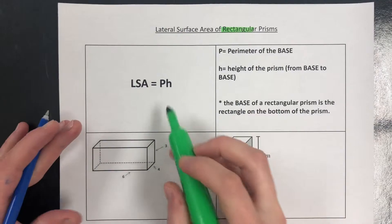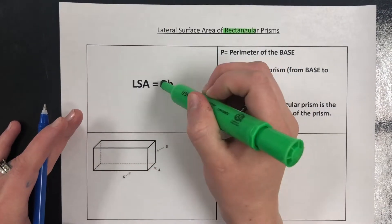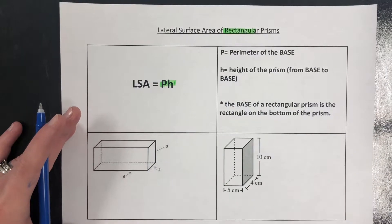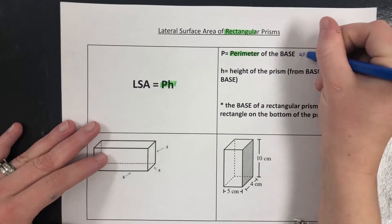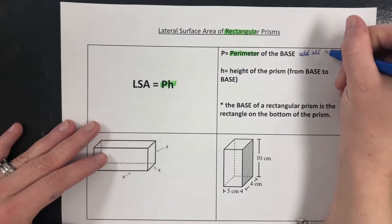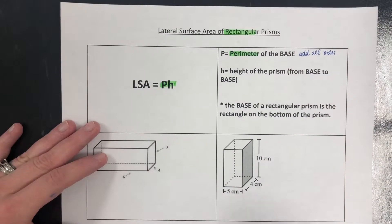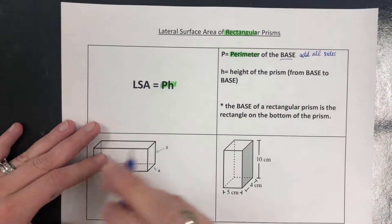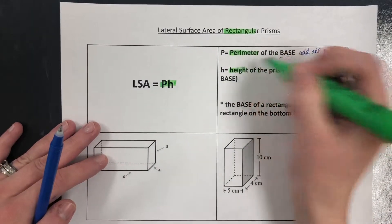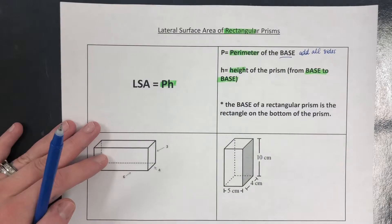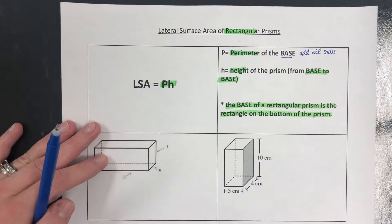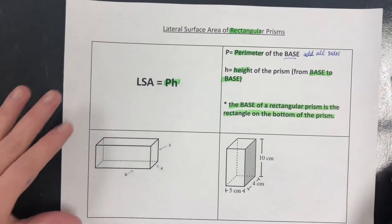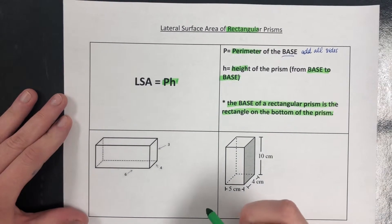So our formula has changed a little bit. It is now just P times H. The plus 2B is gone because we don't need the bases anymore. Again, P stands for perimeter, so to find perimeter we add all the sides. This is the perimeter of the base still. H is just the height of the prism, which is from base to base, and our base is the rectangle on the bottom of the prism.